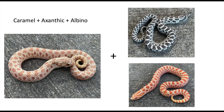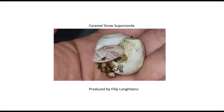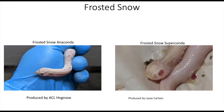Now we're going to add three or more recessive genes to the caramel. First, looking at caramel xanthic albino — you get what's called a Caramel Snow. The snow is the xanthic albino, and we're just adding the caramel into it. Then we have the superconda version of the caramel snow. Taking it a little further, we have the frosted snow anaconda and then the frosted snow superconda.